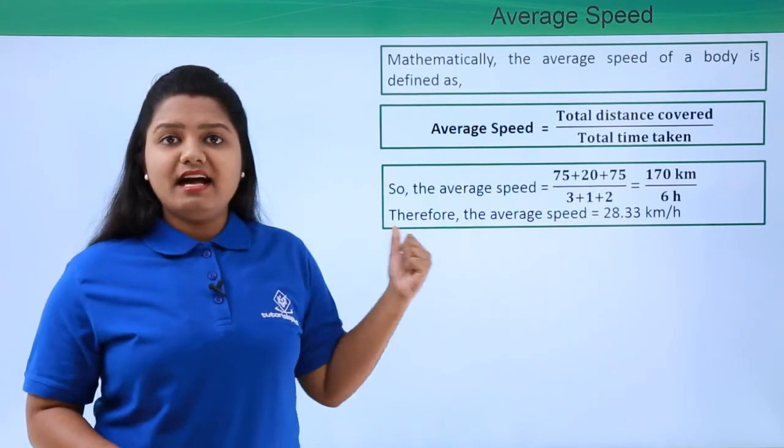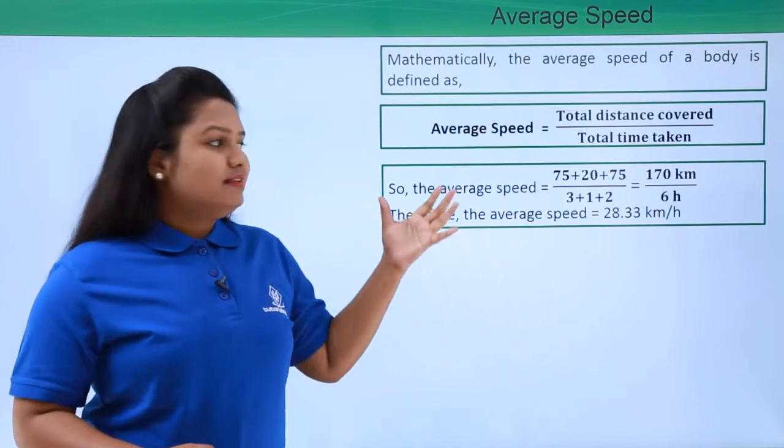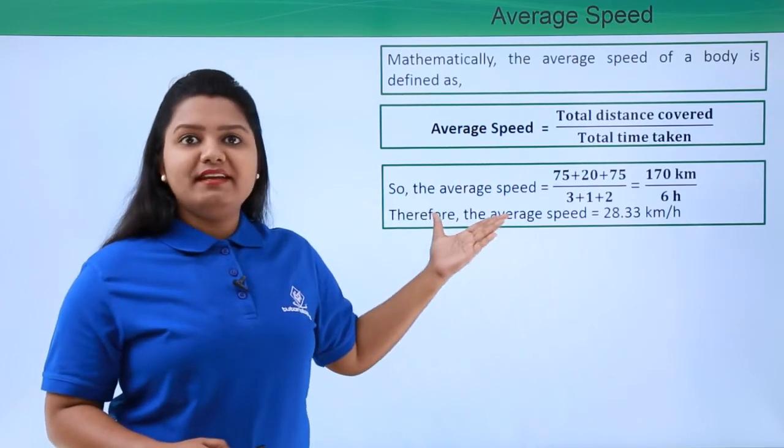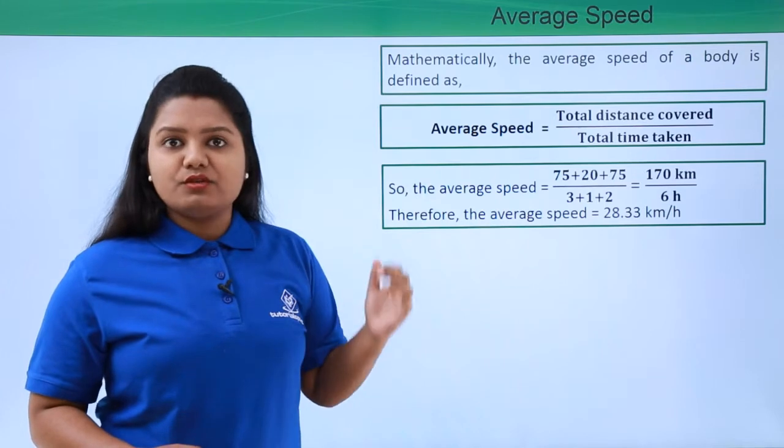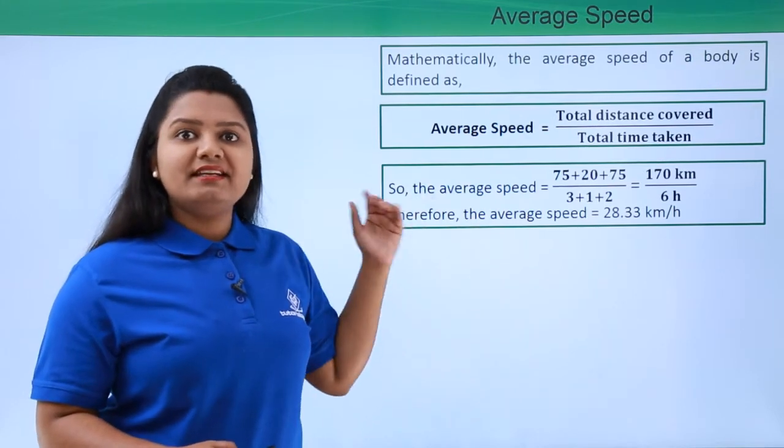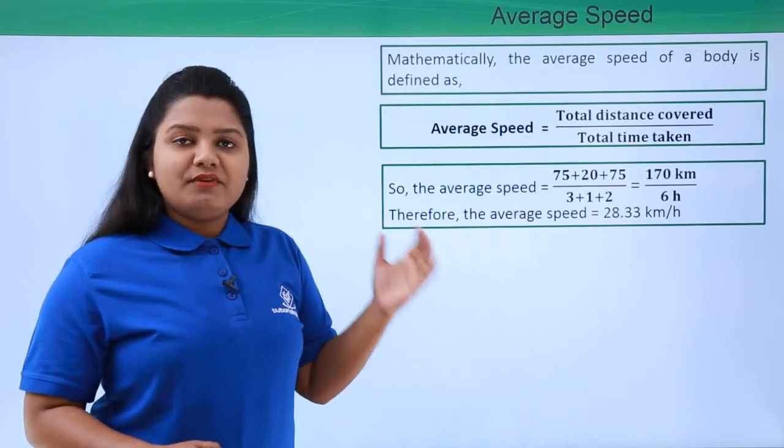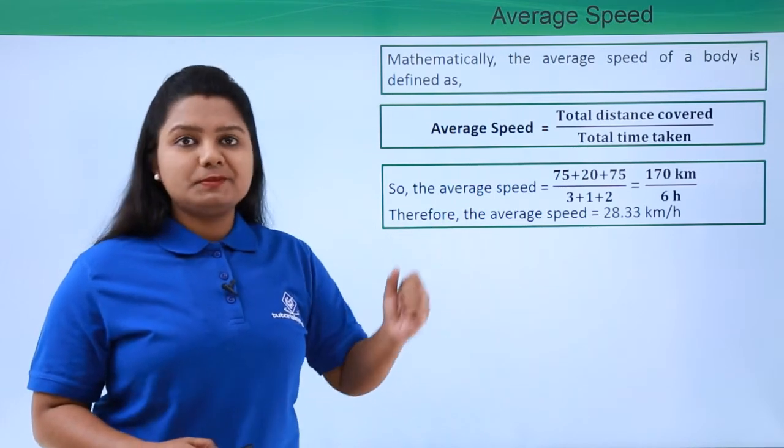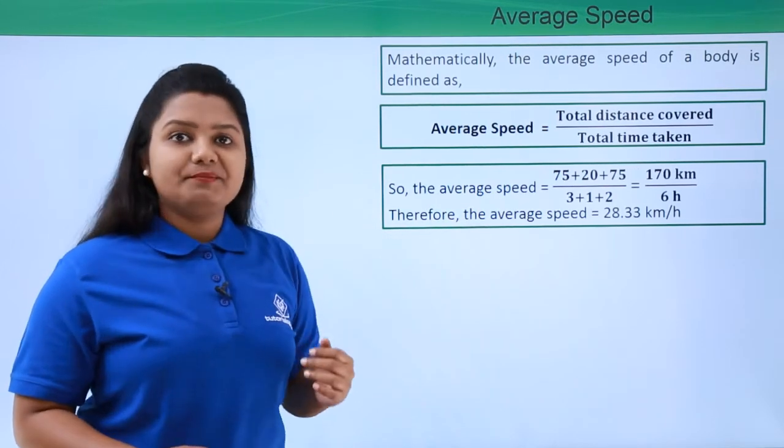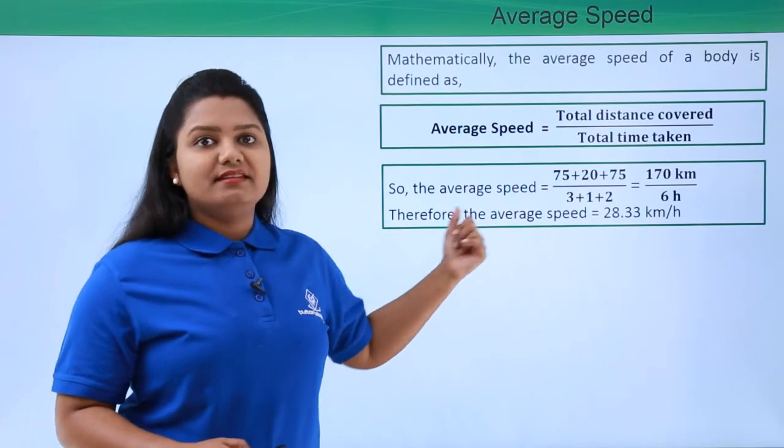Now as I said in the last video, the SI unit of speed is meters per second. So whenever we come across speed in any numerical problem, the first thing that we need to do is to convert it from kilometers per hour to meters per second. Now let's do this in this case.